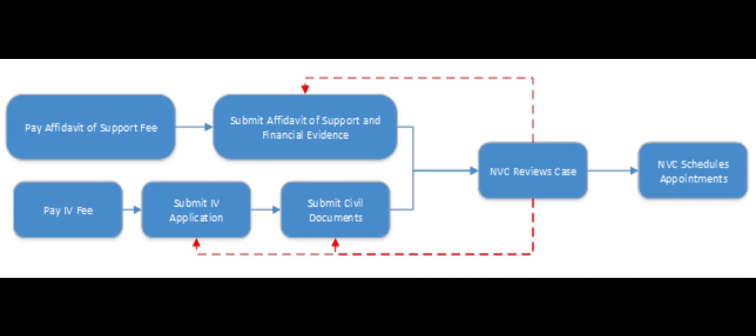Those five steps are: pay the affidavit of support fee, submit affidavit of support and financial documents, pay the immigrant visa fee and submit the application, and submit civil documents.